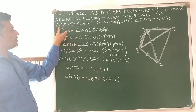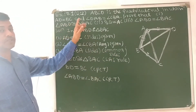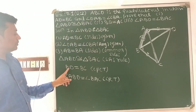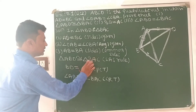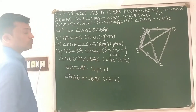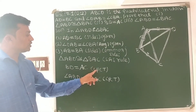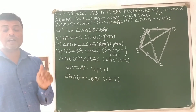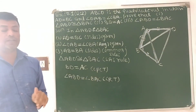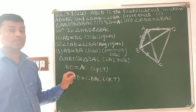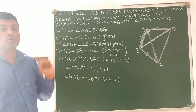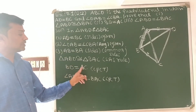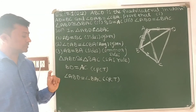Now, next. We have proved triangle ABD congruent to BAC. Second, BD is equal to AC. BD is equal to AC — both are the same according to CPCT. CPCT means congruent triangles' corresponding parts are equal. BD and AC are both corresponding parts of both triangles and they are equal, so BD is equal to AC.